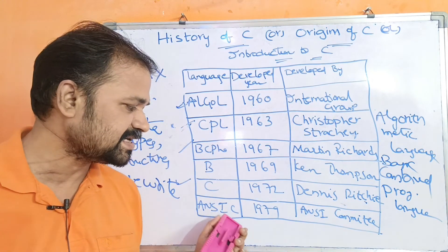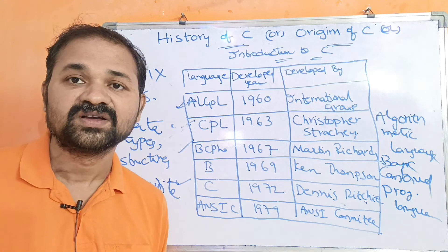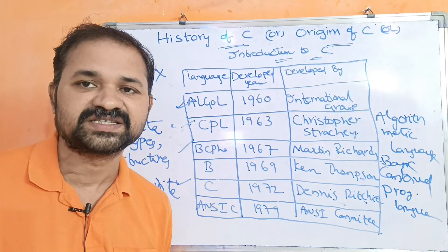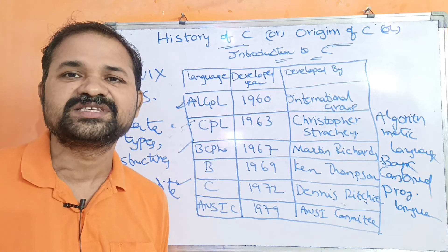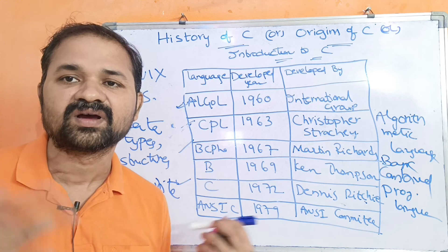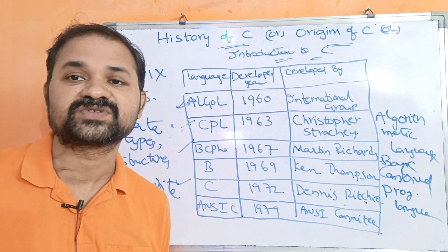So the ANSI standard for C was established in 1979. This covers the history of C, the origins of C, and the introduction to C.